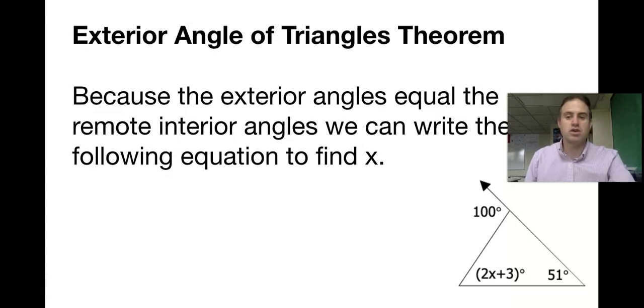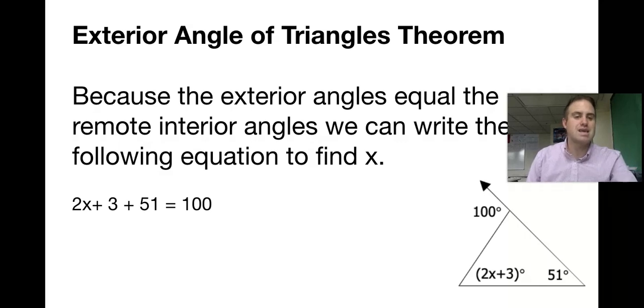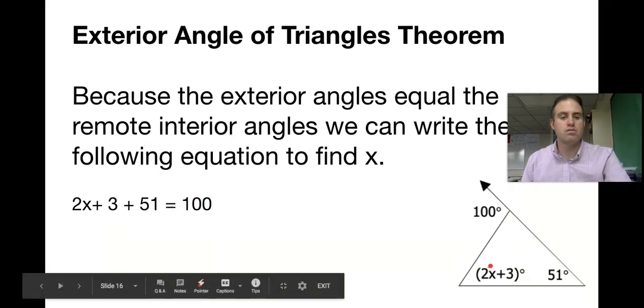The equation we can write is 2x + 3 + 51 = 100. We know that the two remote interior angles added together equal the exterior angle.